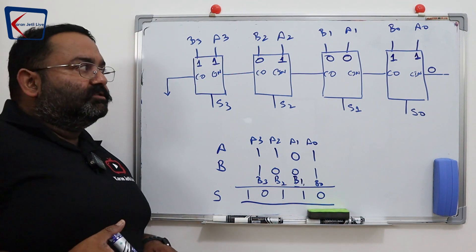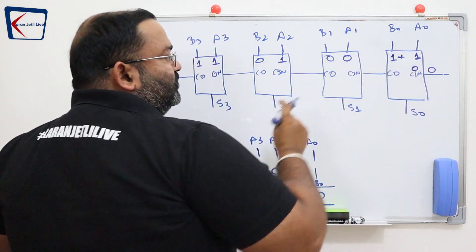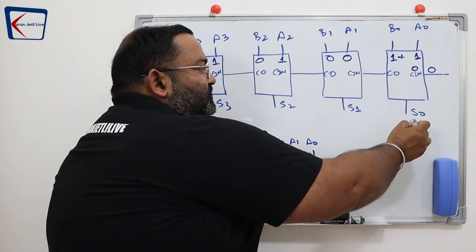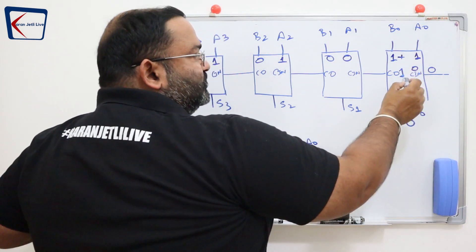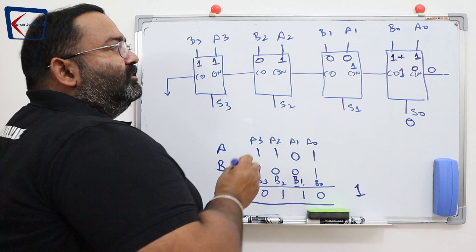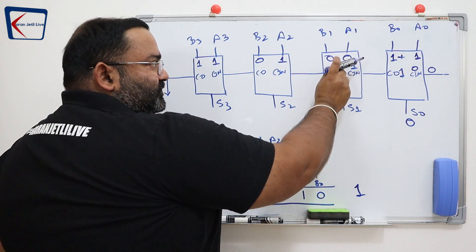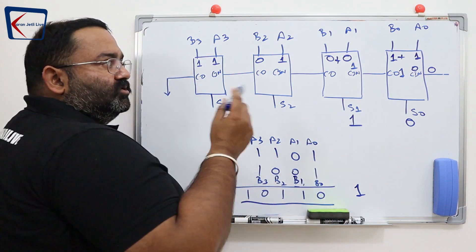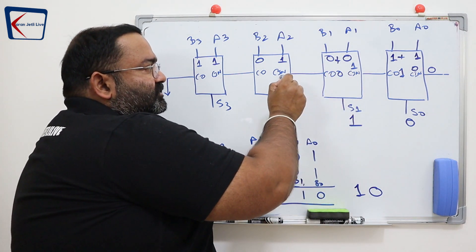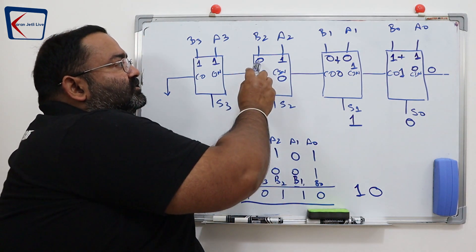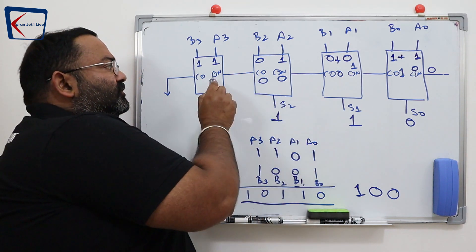Now how does this adder work? It will add these three inputs: 1 plus 1 plus 0 — basically 1 plus 1: sum is 0 and carry is 1. The carry out is 1, so this carry out becomes carry-in to the next 1-bit adder. Again we add 0 plus 0 gives 0, then 0 plus 1 gives 1. No carry is generated so carry out is 0. This 0 comes as carry-in to the next stage. Again 0 plus 1, 1 plus 0 gives sum 0, carry out again is 0.